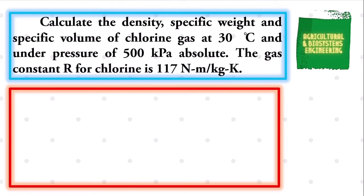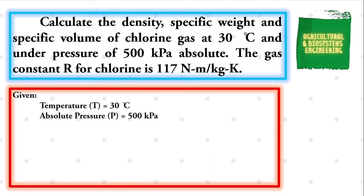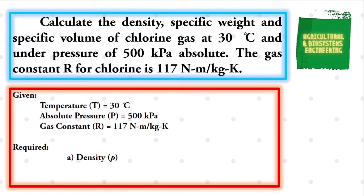The first thing we need to identify is the given: our temperature of 30 degrees Celsius, our absolute pressure of 500 kilopascal, and our gas constant of 117 newton·meter per kilogram·kelvin. The required values in the problem are the density, specific weight, and specific volume.